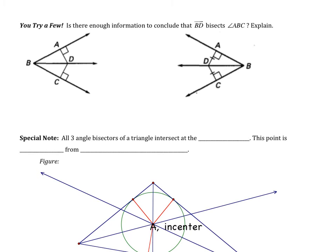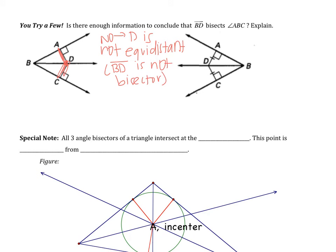Let's see how we did. For the first problem — using the theorem — is that point equidistant from the sides? You have two segments that are marked perpendicular, but they're not necessarily marked congruent. So D is not equidistant from the sides, meaning BD is not necessarily the bisector. Using congruent triangles: I have right angles and the reflexive property — that's it. No congruent triangles tells us BD is not the bisector.